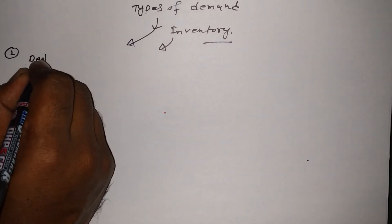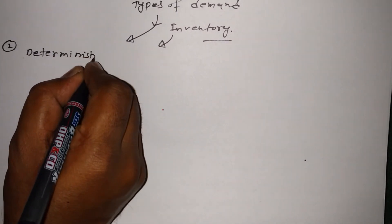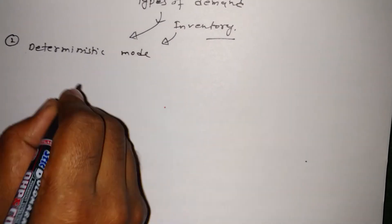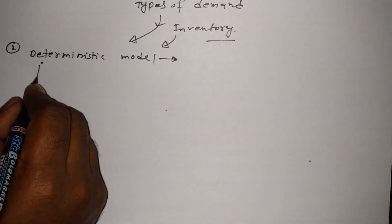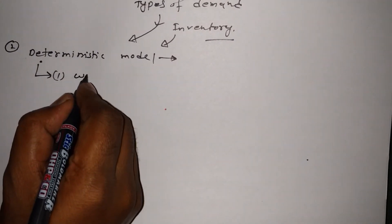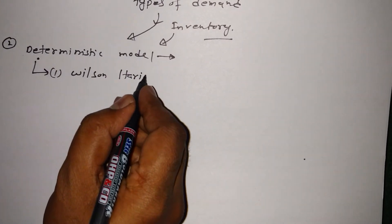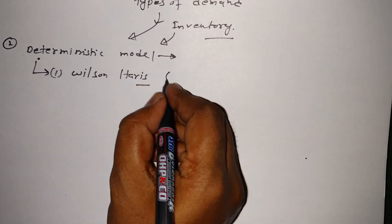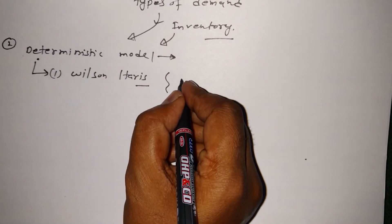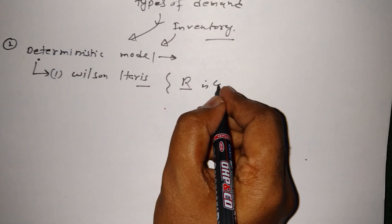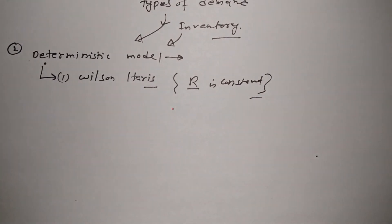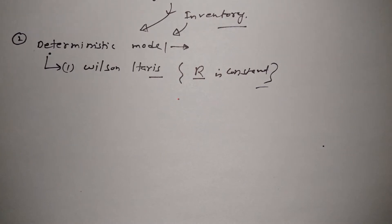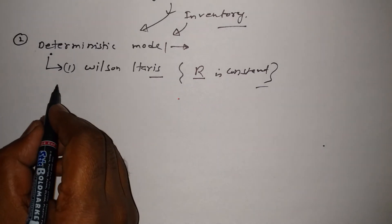Here I'm going to discuss the deterministic model. It has sub-parts, and the first part is the Wilson-Harris method. In this method, the consumption rate — denoted by R — is constant. This is going to be a slightly lengthy tutorial because I'll be sharing a couple of formulas as well as a graph.